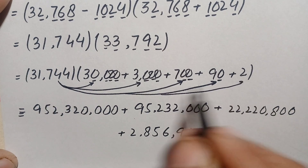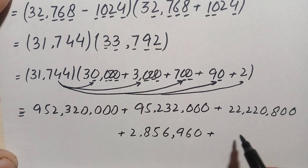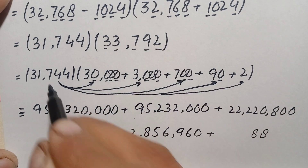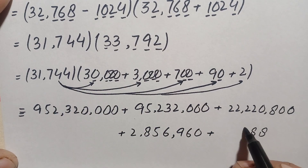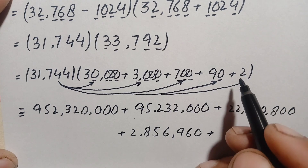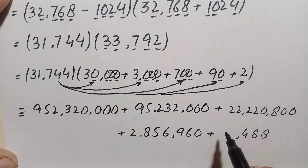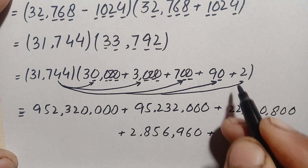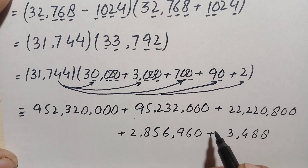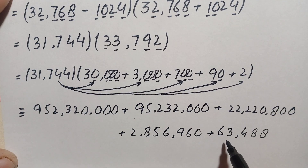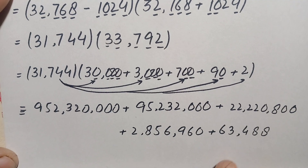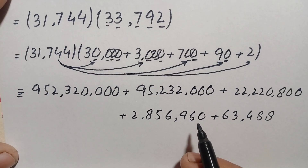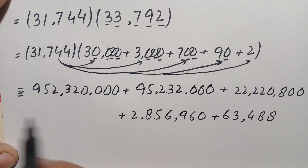Multiplying 31,744 by 2: 2 times 4 is 8; 2 times 4 is 8; 2 times 7 is 14, carry 1; 2 times 1 is 2 plus 1 is 3; 2 times 3 is 6. The product is 63,488.